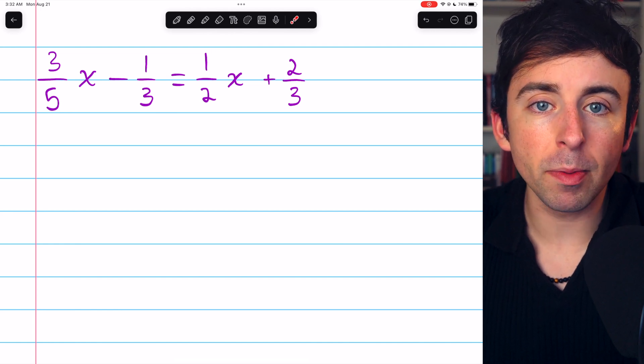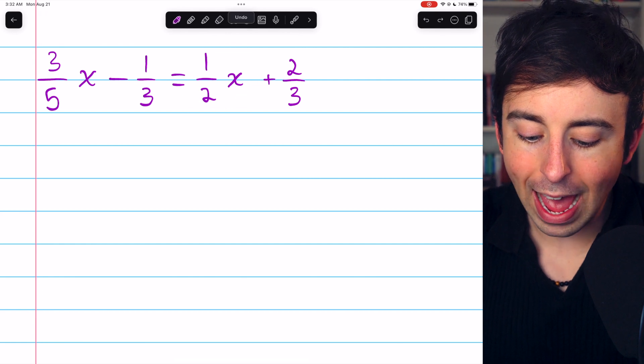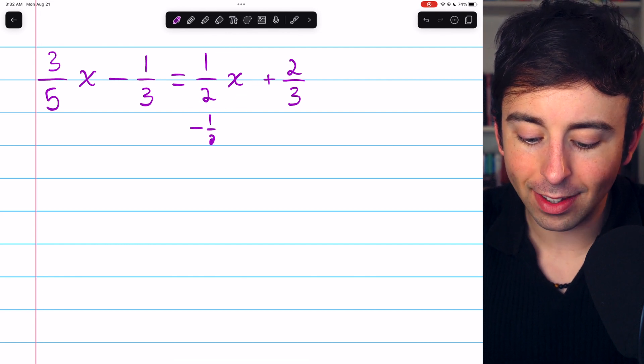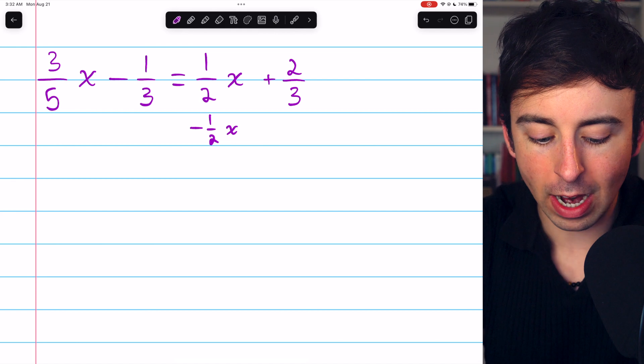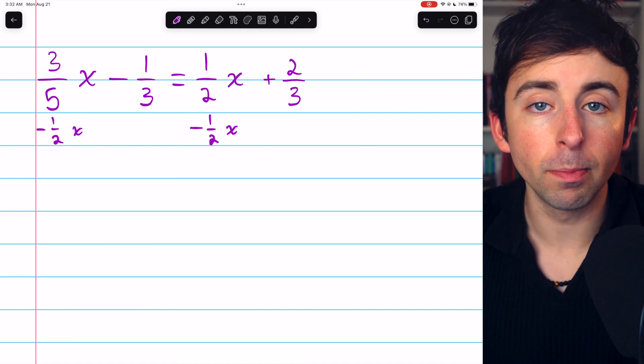Let's move all the variable terms to the left. So we'll begin by subtracting 1/2x from both sides. This 1/2x is on the right, and we want to move it over to the left, so we subtract it from both sides.